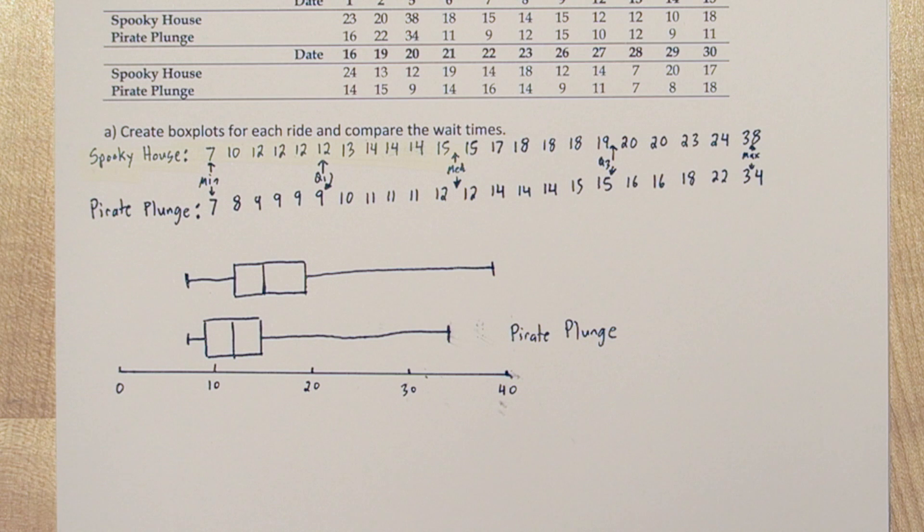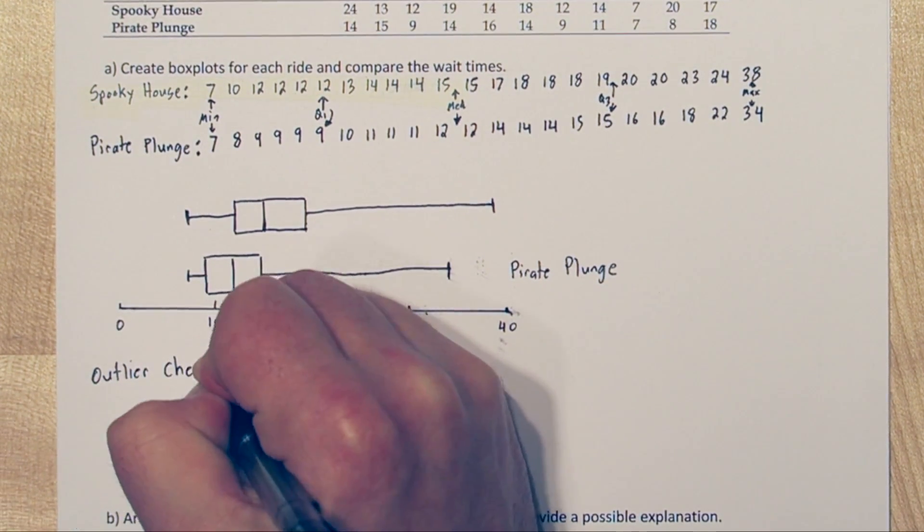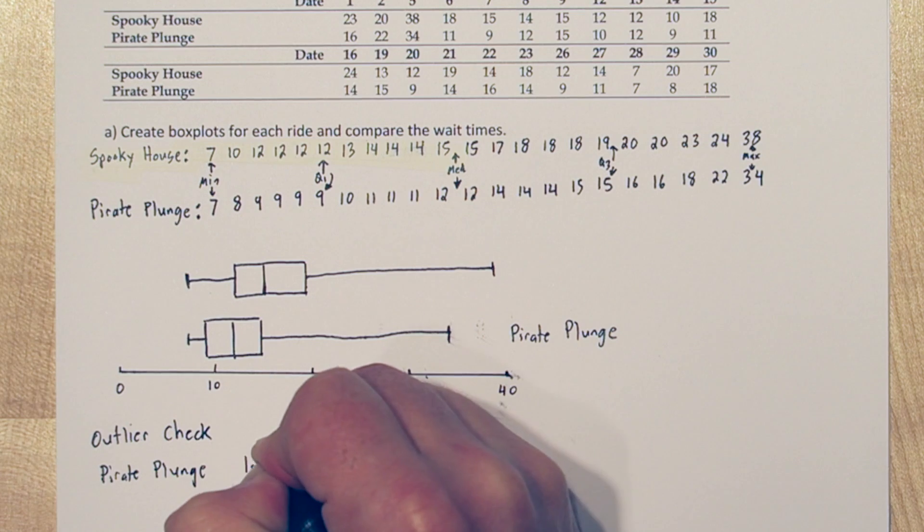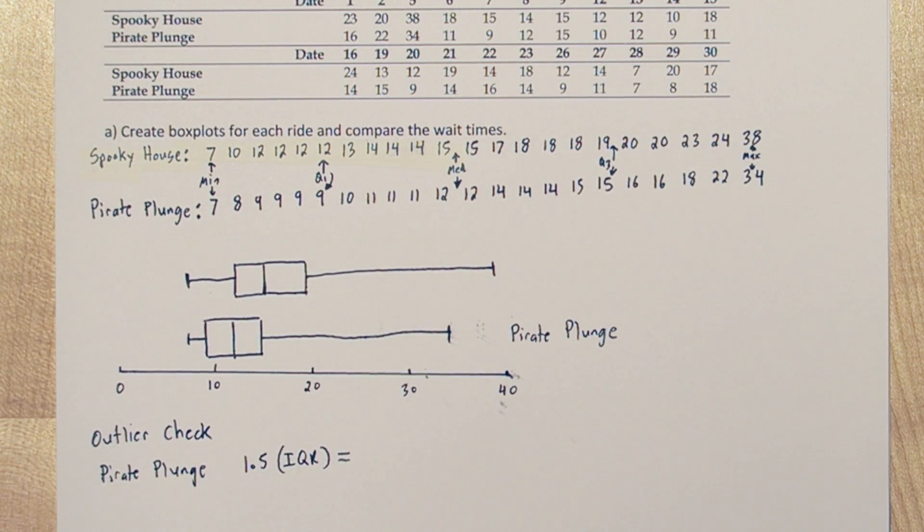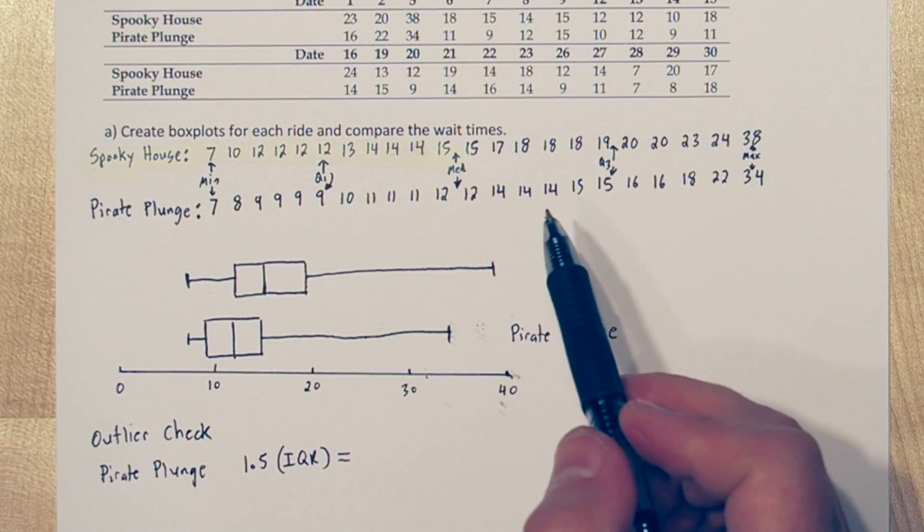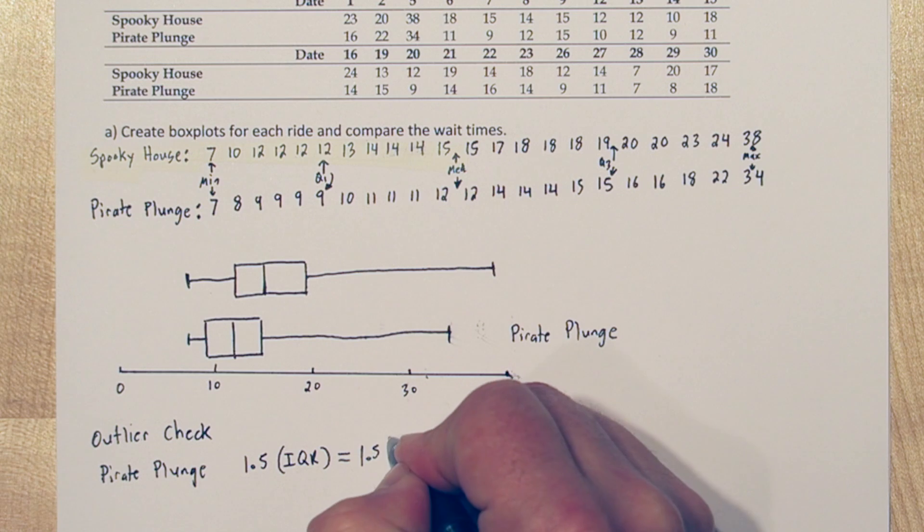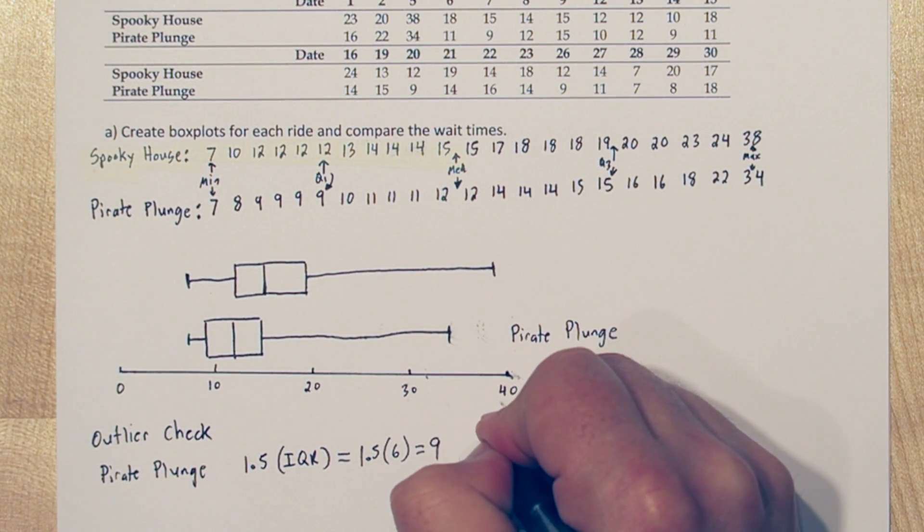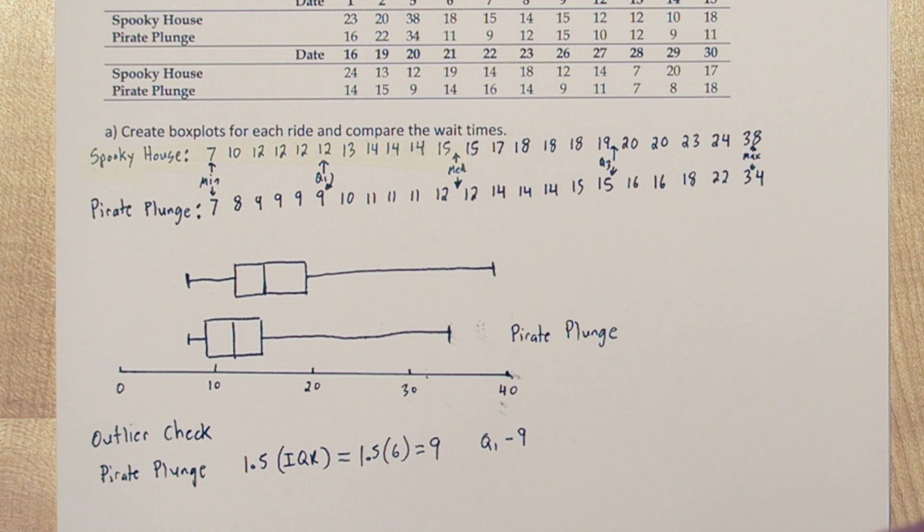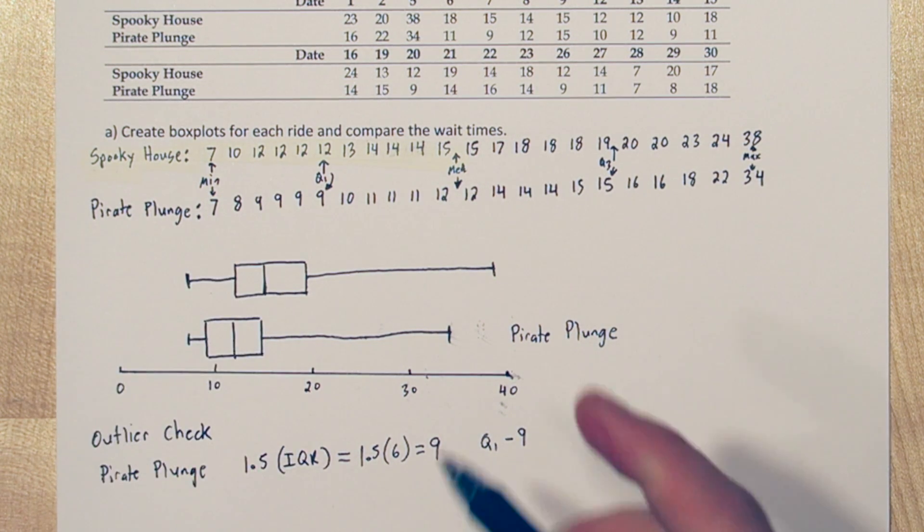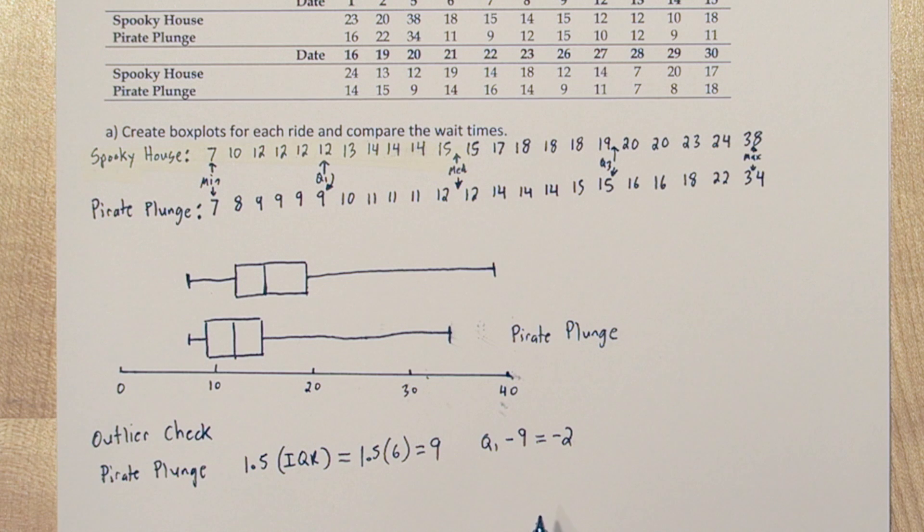To make those, we're going to check for outliers and modify these box plots if necessary. So to check for outliers, we're going to use the 1.5 IQR rule. So for Pirate Plunge, the IQR, the interquartile range, was 15 minus 9, so 6. And if we multiply that by 1.5, we get 9. So here's what we do. We're going to take quartile 1 and subtract 9. So quartile 1 is 7, minus 9 is negative 2. Since there was no waiting times of less than negative 2, which is impossible, we have no lower outliers.